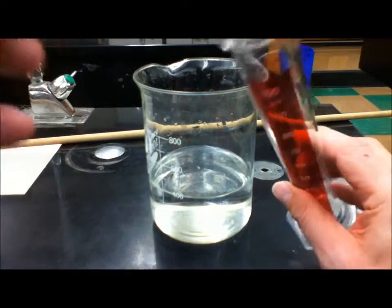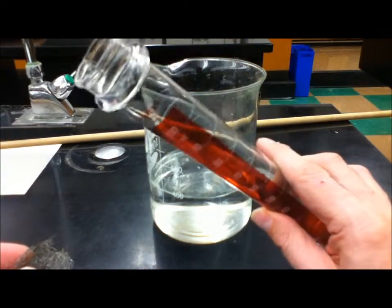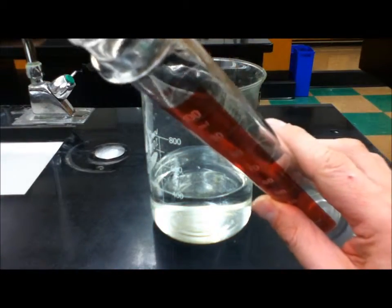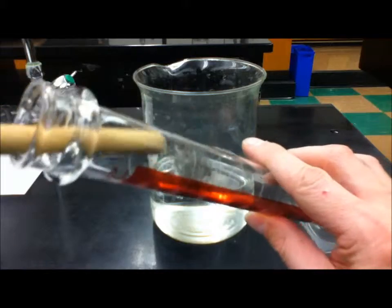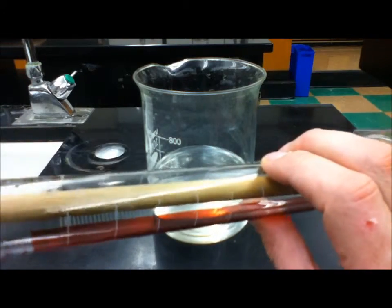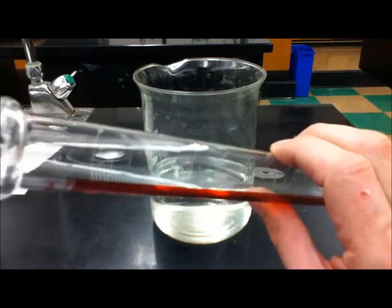So what we're going to do is take a hundred mil graduated cylinder and push our iron wool using a stick here, because this cylinder is pretty long, to the bottom of the cylinder, not the flask.